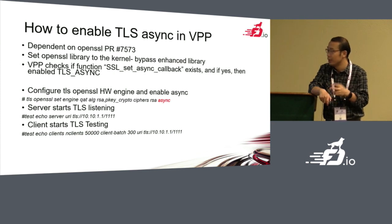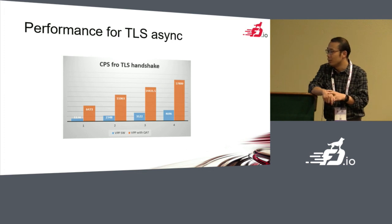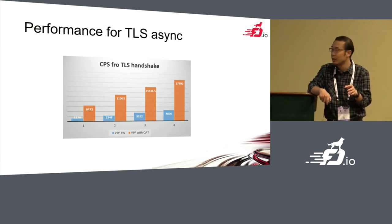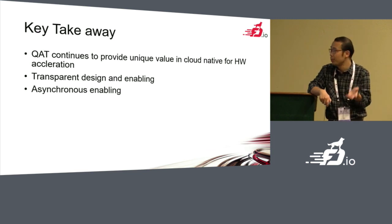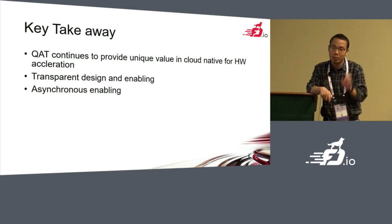This is how we enable TLS async in VPP. We provide command-line options; you can use sync mode, or add an extra command to enable async mode. The final performance test based on sync and async modes shows that for one core, we have six times performance improvement compared with software-only. The key takeaways: we leverage QAT to offload crypto in the cloud-native environment, we implement a transparent TLS design, and we enable async mode for the framework.